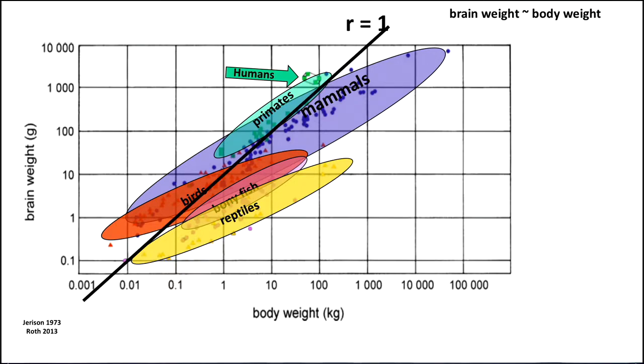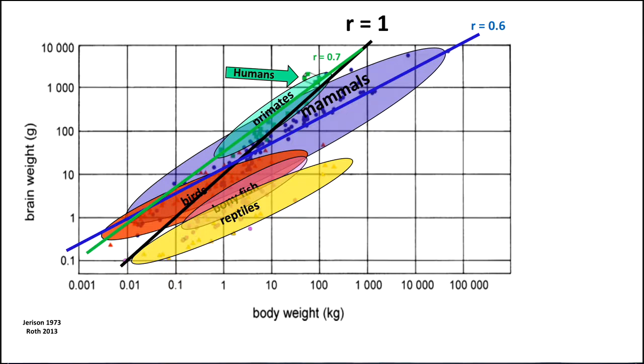Now, notice, when you compare the slopes of these ovals to the r equals 1 line, you'll see that they tilt over a little bit more. Their slopes are a little bit less than 1. What that means is, if you double the size of the body, you don't quite double the size of the brain. The brain doesn't keep up with the size of the body. That's why these slopes are tilted over compared to the r equals 1 line. If you fit the lines to mammals, you get r equals about 0.6. If you fit the line to primates, you get r equals 0.7, a little bit steeper, a little bit close to r equals 1.